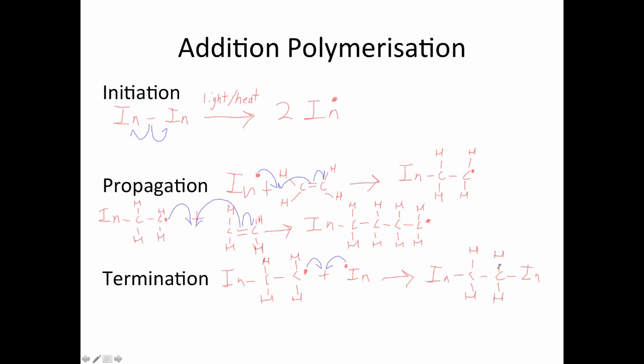Alternatively, two of these chains could react together, as shown in this reaction here. We get a long chain, just like this, where we have an initiator on either side.